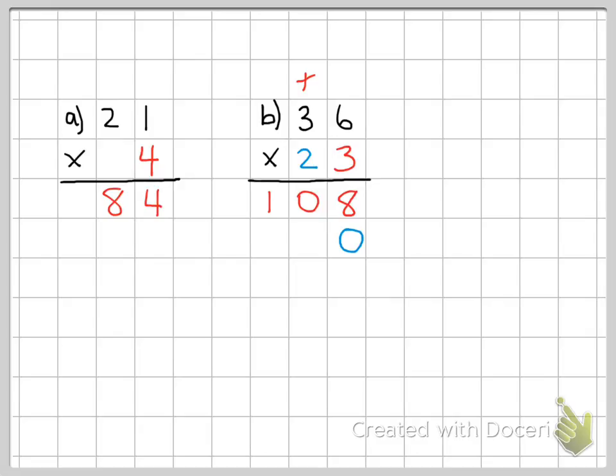2 times 6 is 12. We put the 2 underneath and the 1 above it. Next, 2 times 3 is 6, plus 1 is 7.